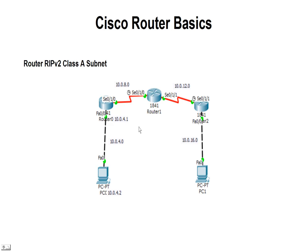This is a small network for Class A. We only have three routers and two PCs, but you can see I'm using four different Class A subnets: 10.0.4.0, 10.0.8, 10.0.12, and 10.0.16.